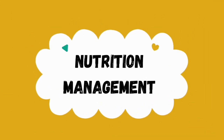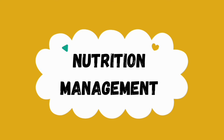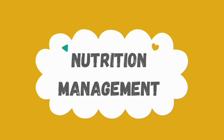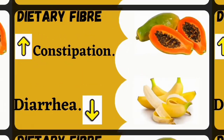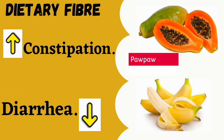Now let us talk about nutrition management — the most important part, because we need to learn how to manage these problems at home. When you have constipation, increase your intake of fiber because it helps speed up bowel movement by adding weight to your stool. For example, papaya is very high in fiber, has high water content, has enzymes that aid digestion, and also contains potassium which boosts muscle movements and relieves constipation.